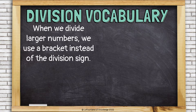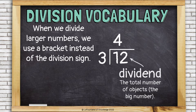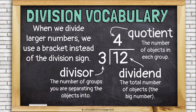When we divide larger numbers, we use a bracket instead of a division sign. Still, we have the dividend, which is the larger number; the divisor, the number of groups; and the quotient — the answer, or the number of objects in each group.